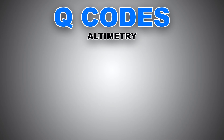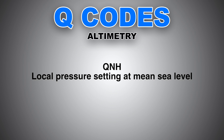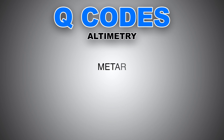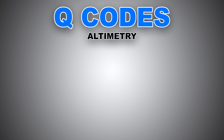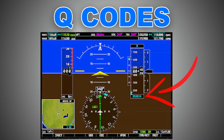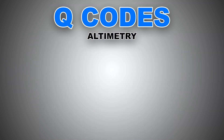Now that we understand the difference between altitude, height, and elevation, let's move to the Q-codes. First and the most important one that you will be hearing every single flight is QNH. Please keep in mind that the three letters Q-N-H do not actually stand for anything. QNH is the sea level pressure setting in hectopascals, millibars, or inches of mercury, depending on what unit the country you operate within chooses. This value, when entered into the altimeter scale, your altimeter will read your altitude above mean sea level.